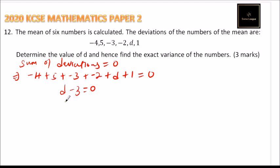This implies that d is equals to 3. So if d is equals to 3, what it means is that from the mean, if you subtract the number from the mean, it should give you 3.